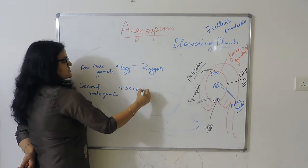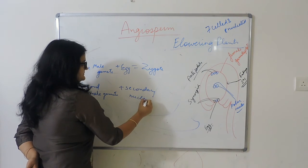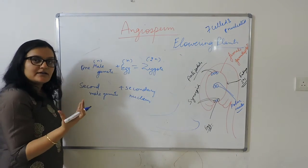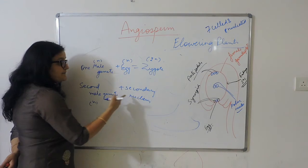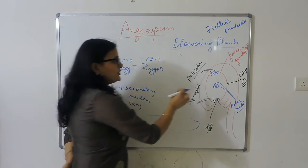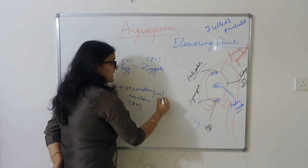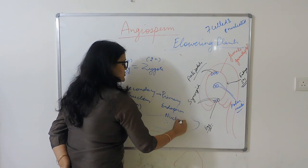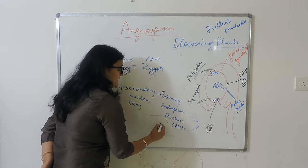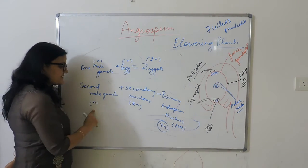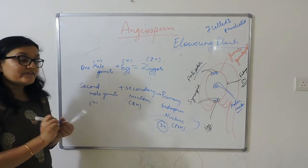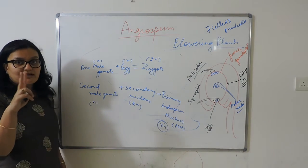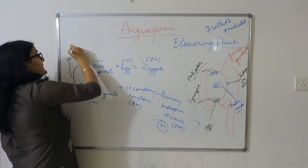The second male gamete fuses with secondary nucleus. The condition is 2N for zygote, diploid zygote. Second male gamete is N haploid, and secondary nucleus is 2N because it is made by two nuclei. So this forms the primary endosperm nucleus, which is in short PEN, and this is 3N condition, triploid. So it has two fusions: one for zygote formation and one for endosperm formation.